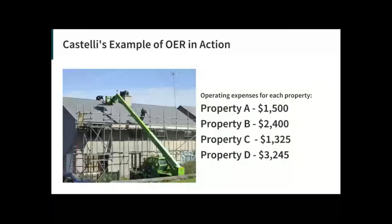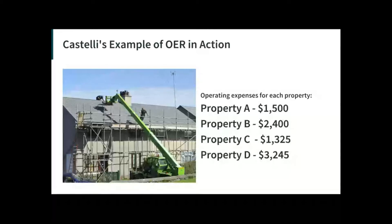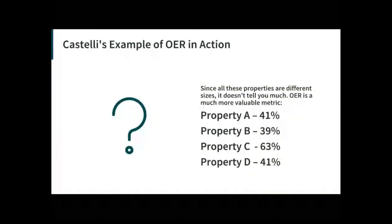Properties A, B, C, and D each have operating expense totals for that particular period. Since all these properties are different sizes, this type of information doesn't really tell you much. Property D is higher, but there's no real way to tell exactly what's going on behind the scenes.